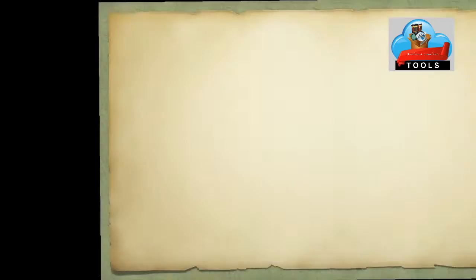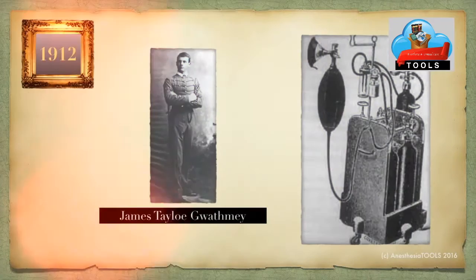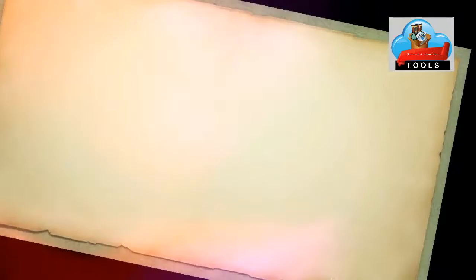Halstead developed the use of cocaine by perineural injection for local anesthesia. In 1898, August Bayer introduced clinical spinal anesthesia using cocaine. The idea of using gaseous mixture for anesthesia administration was seeded by Guatmi when he produced his nitrous oxide, oxygen, ether apparatus in 1912.